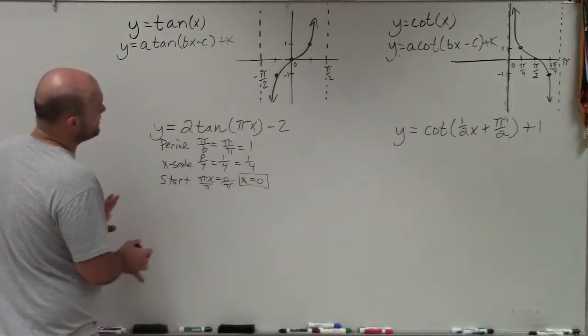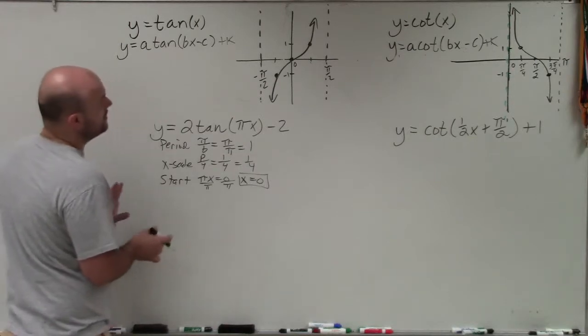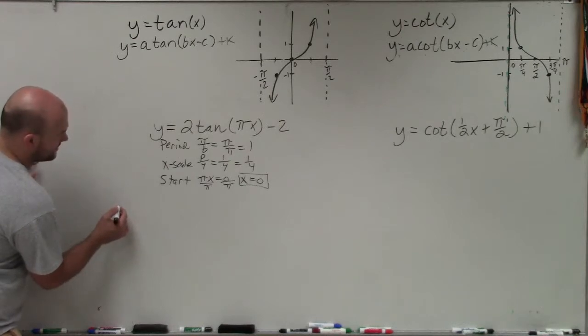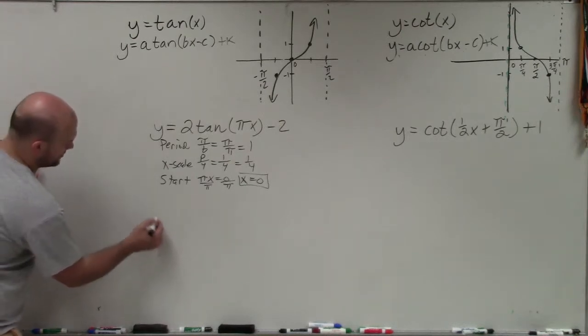So what I'm going to do is I'm going to graph two periods to the right. So let's start with, we're starting at 0. So let's have 0 be right here.